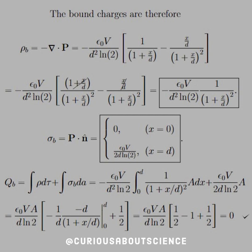All right, and then for the surface-bound charge, we need the polarization dotted with the normal vector. So at x equals 0, that's just 0. But at x equals d, we have epsilon naught V divided by 2d ln of 2. Pretty quick to do that dot product.